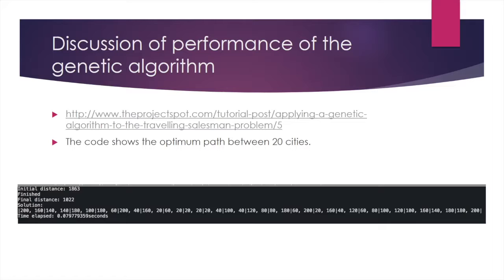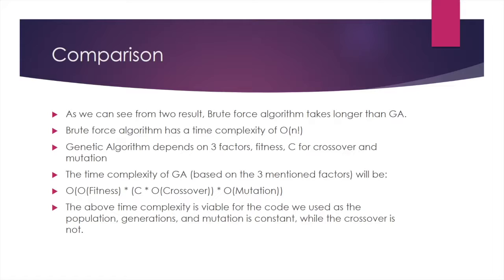However, if we use genetic algorithm like this slide shows, we can save a lot of time. For this project, we calculated the optimum path among 20 cities and we calculated all solutions in only 0.07 seconds. Compared to the 77 million years for brute force algorithm, the performance increase of genetic algorithm is marvelous.